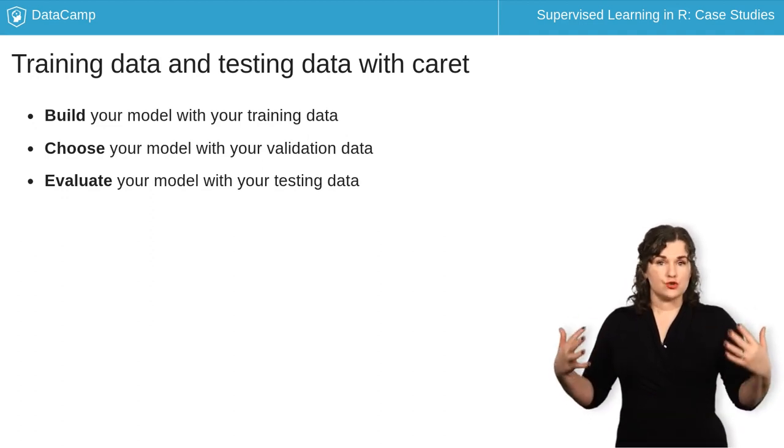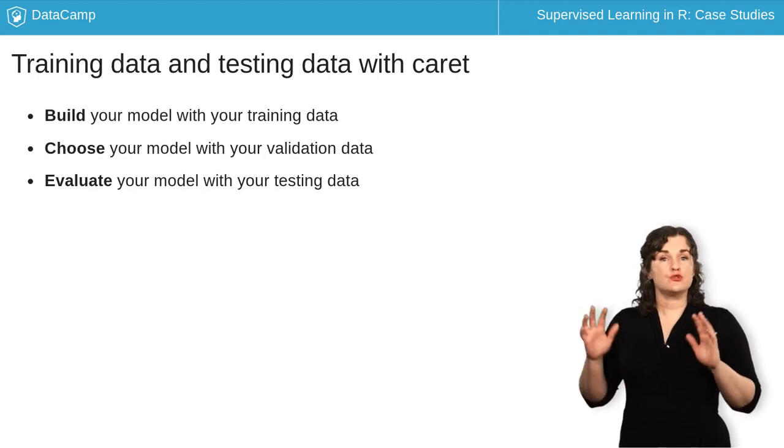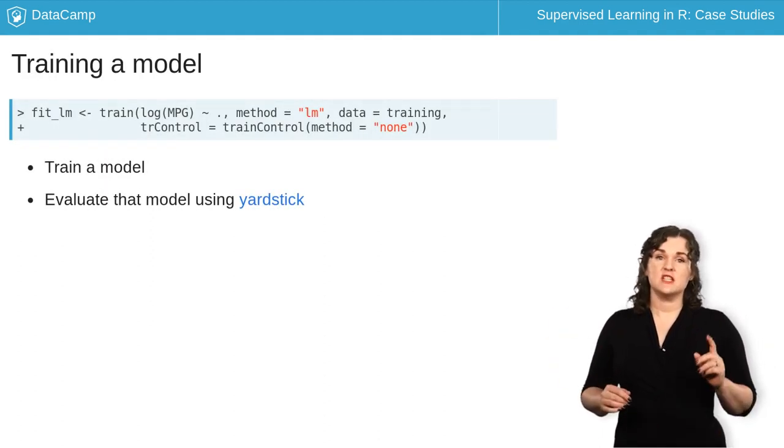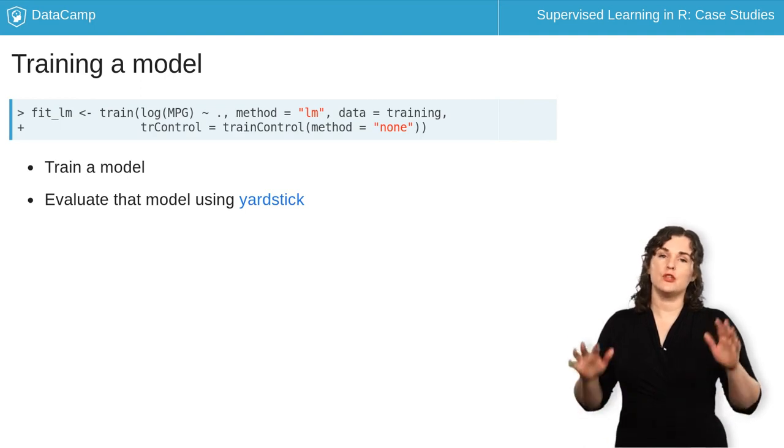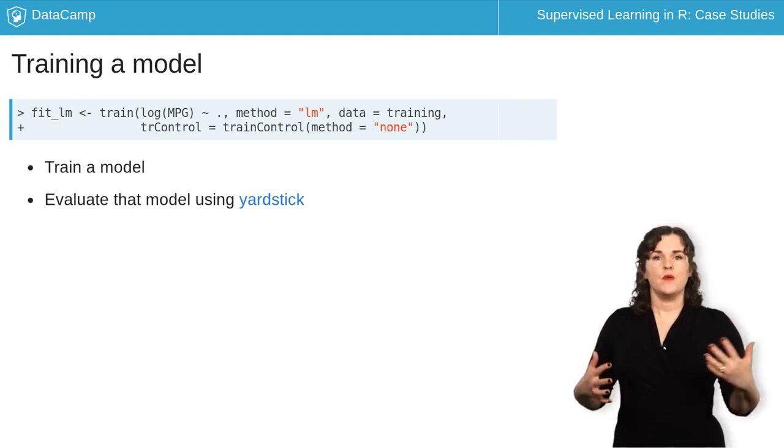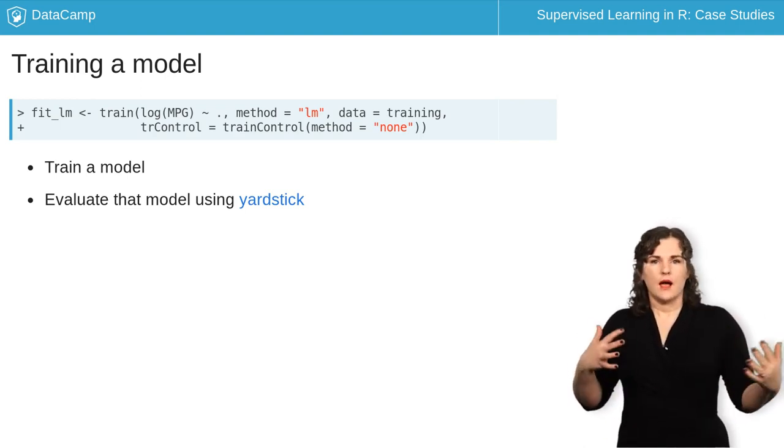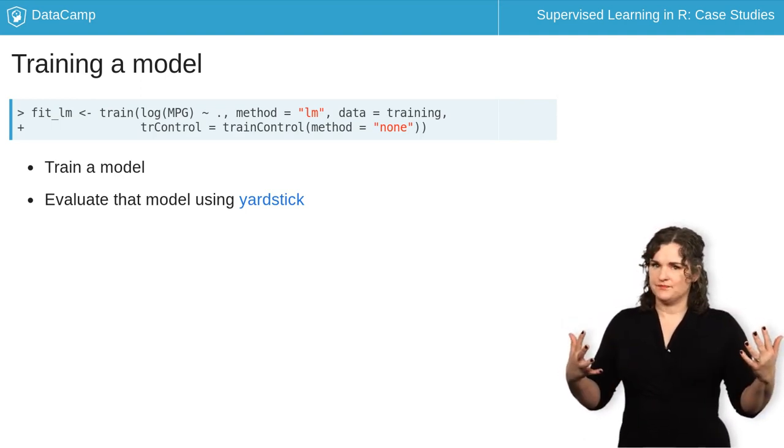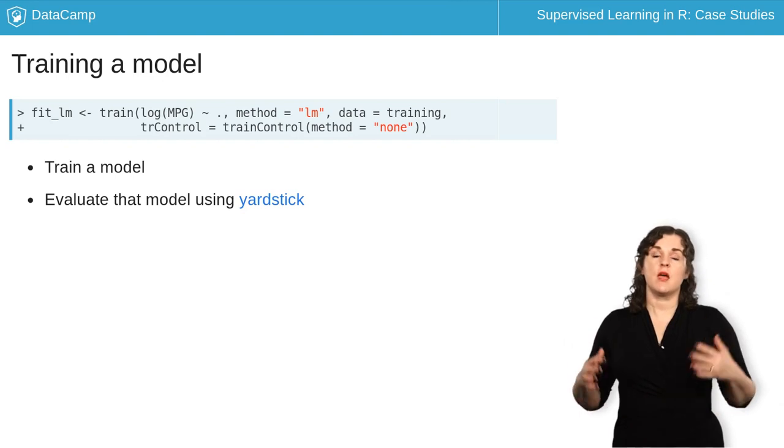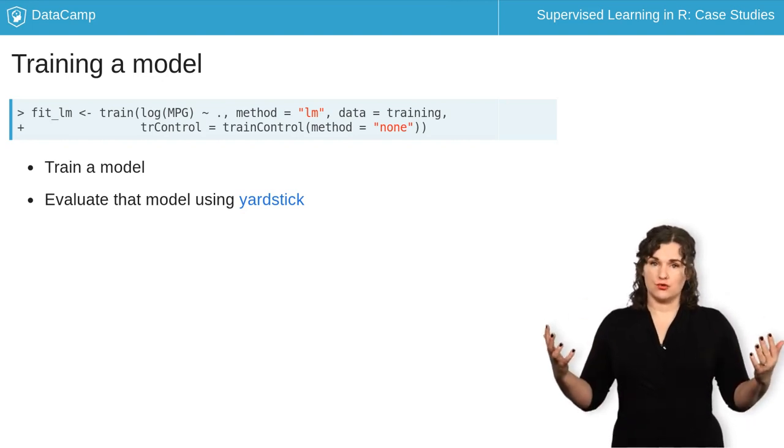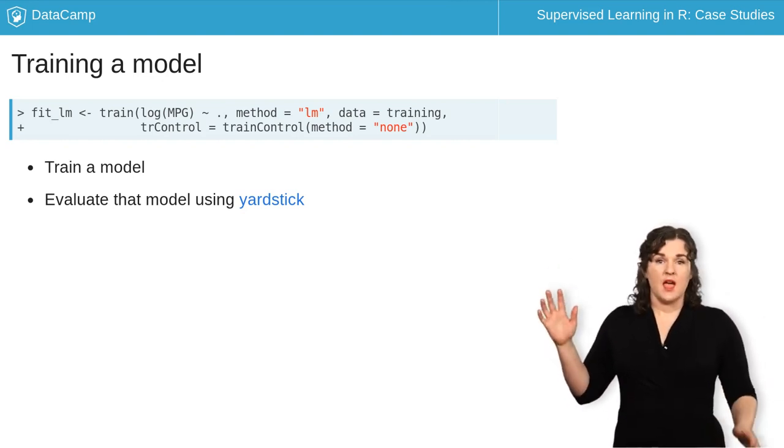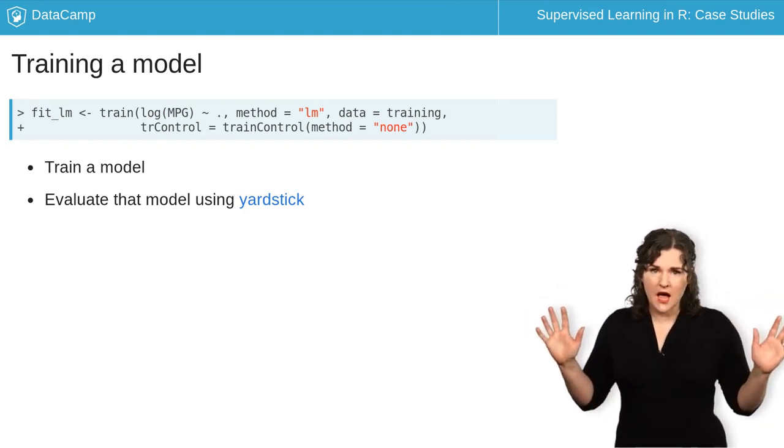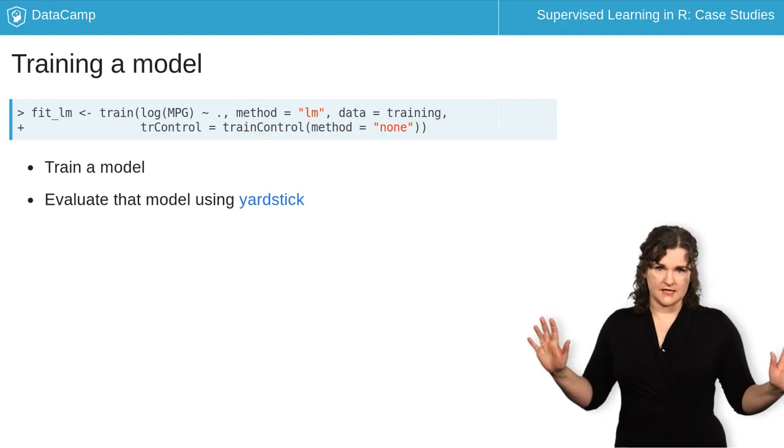Once you have a training data set you can train a model using that data set. In Caret you specify models using the train function with details of what kind of model it is and in what way you want to train it. We're going to start with method equals none in train control as you see here. This means we're telling Caret just train the model one time on the whole training set.